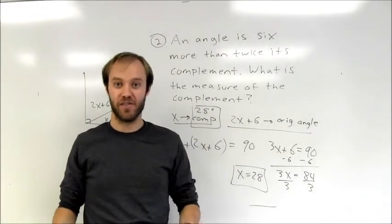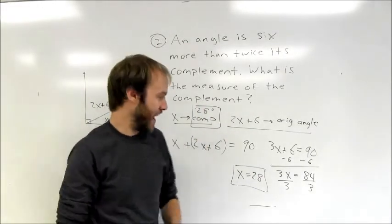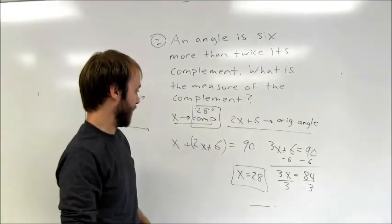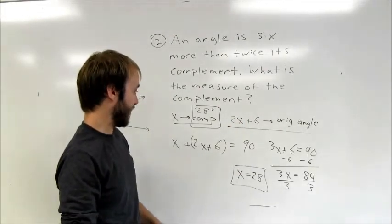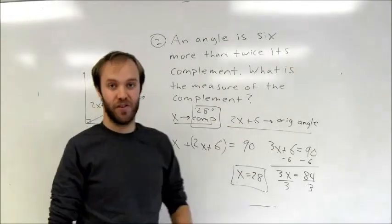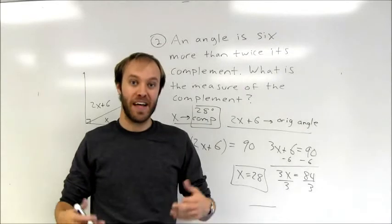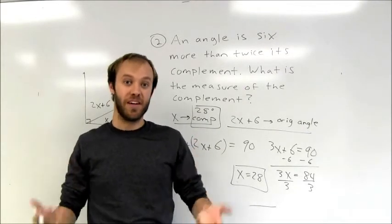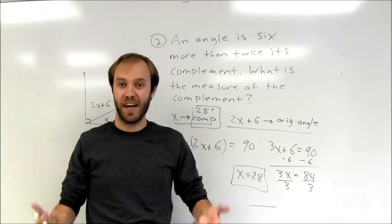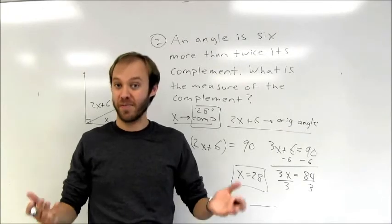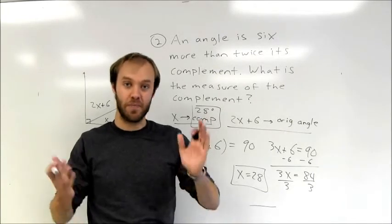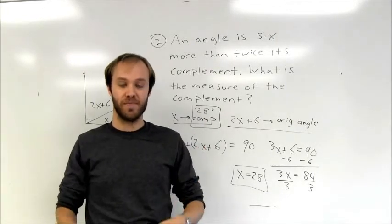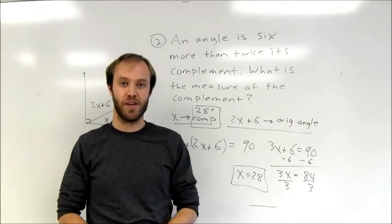Had I been asked to find the measure of both angles, I could substitute back in and find a 62-degree angle for the other one. The basic idea: pick your variable, determine what it represents, consider drawing a picture to visualize, then set up and solve your equation.